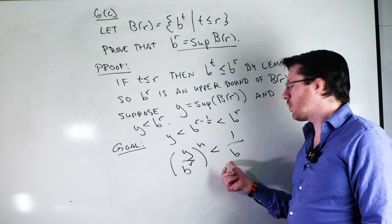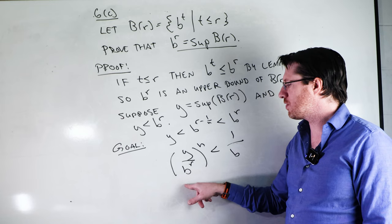I should be able to pick a large enough N such that this quantity will get underneath one over B. This quantity we know is less than one because BR is already bigger than Y. So when we divide them, it is less than one.